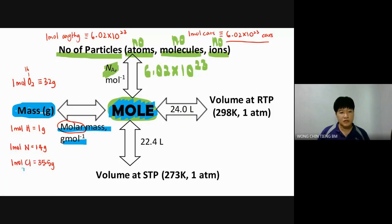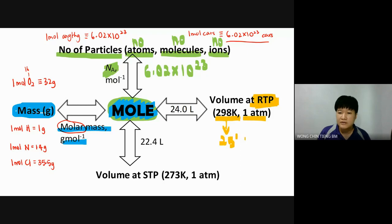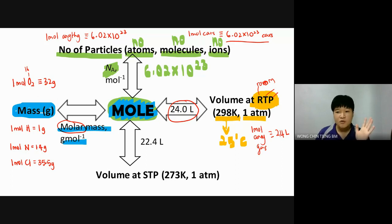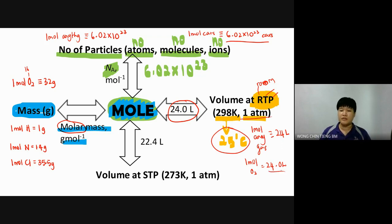Volume has two conditions. Volume at RTP means 298 K and 1 atm — 298 K equals 25°C — that is room temperature and pressure. RTP stands for room temperature and pressure. The molar volume at RTP is 24 litres, meaning one mole of any gas at RTP equals 24.0 litres — with the condition of 25°C and 1 atm.